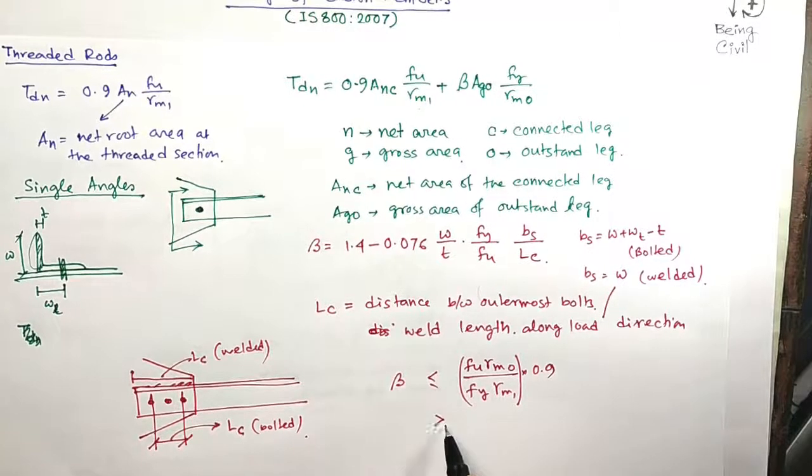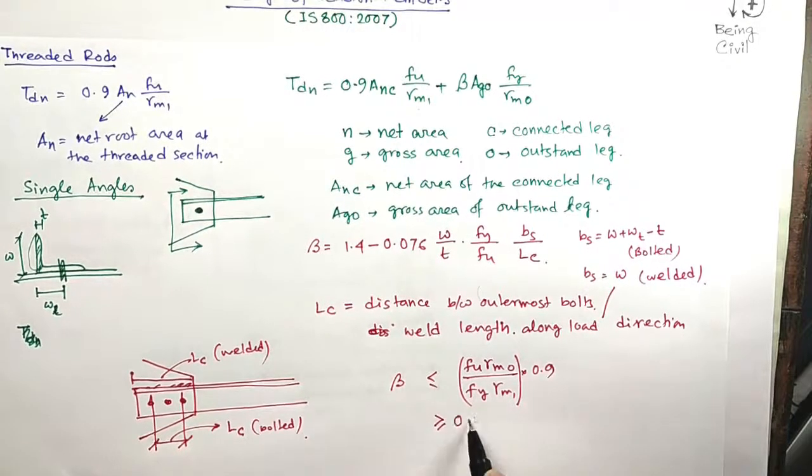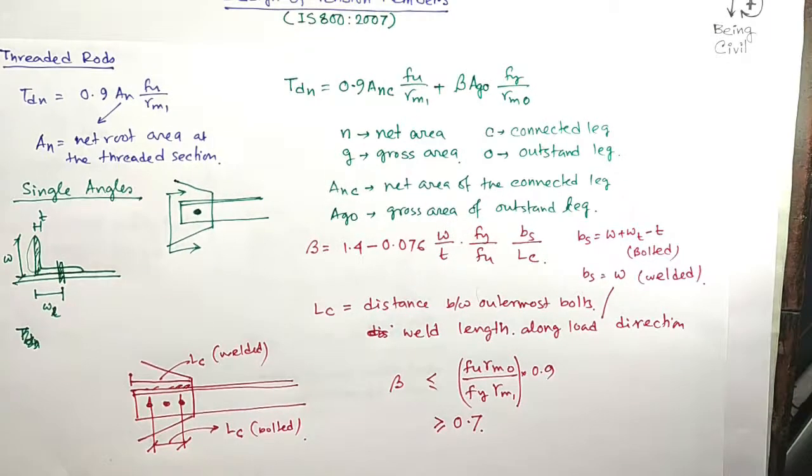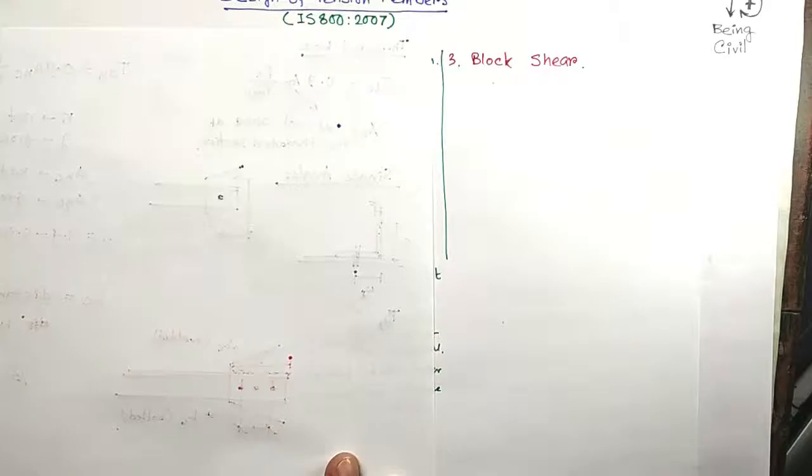And beta value should be greater than or equal to 0.7. It means if you get the beta value less than 0.7, you must take 0.7.